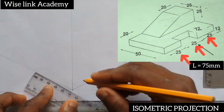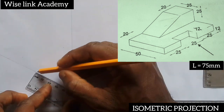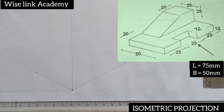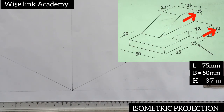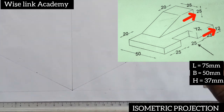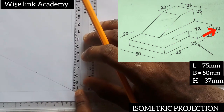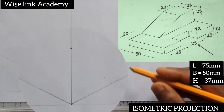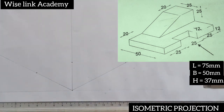My breadth is 50, so I'll measure out 50 from this point. Next up, my entire height is given to be — if you can see very well — 12 plus 25. If I add them together, I will have 37. So my entire height is 37. At this point here, I'll measure out 37 to this point.